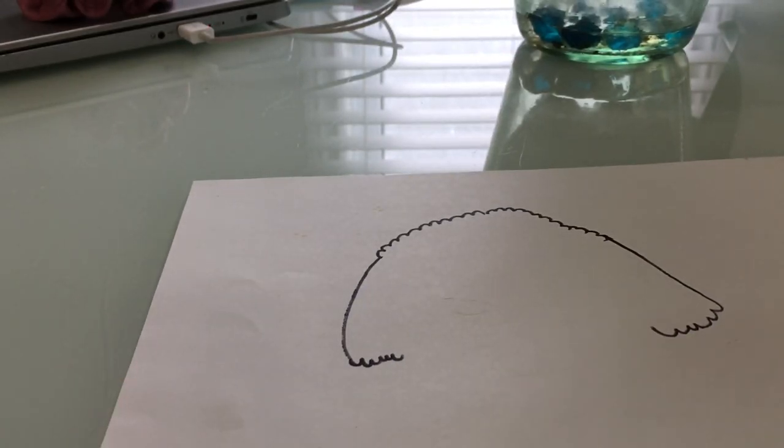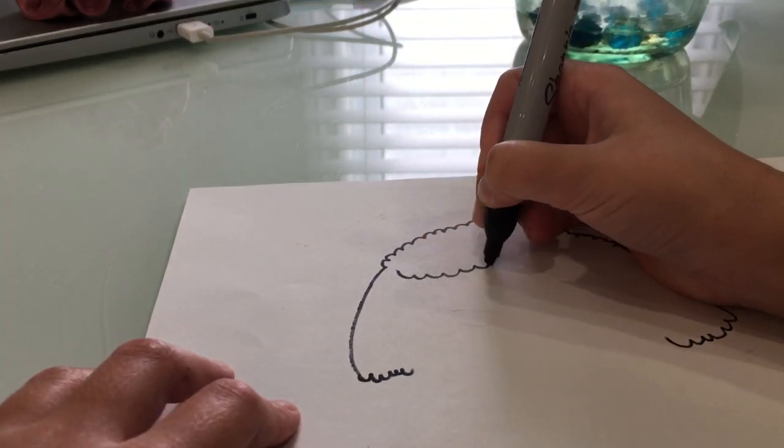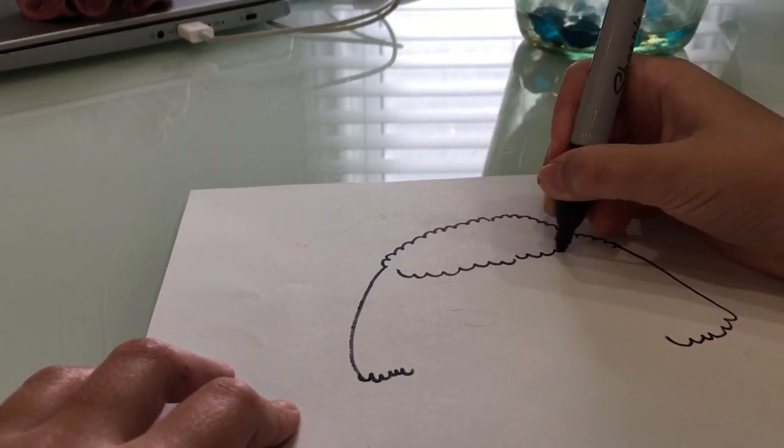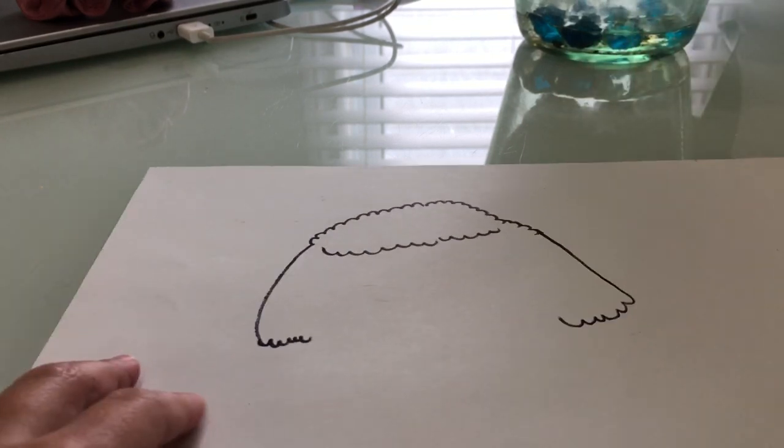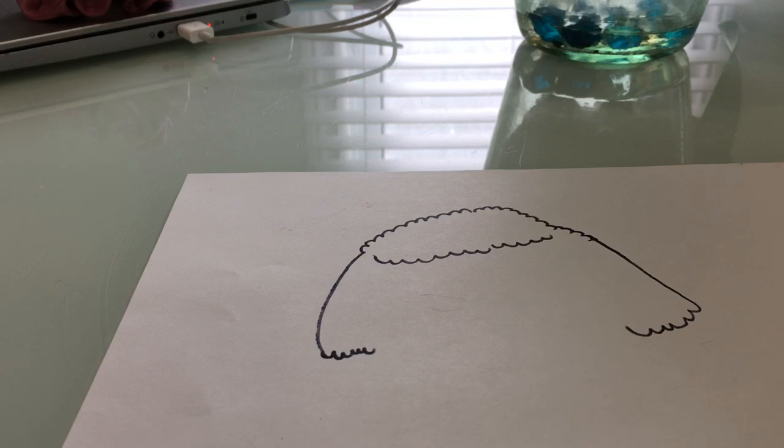And now, we'll draw a bit of fur that is over Luka's eyes. It's a little bump like a cloud. You can pause the video if I'm going too fast.